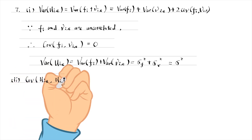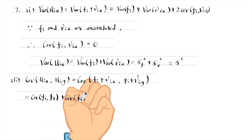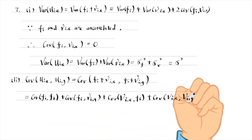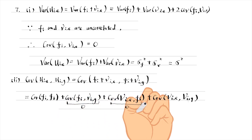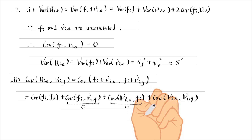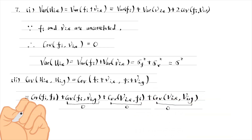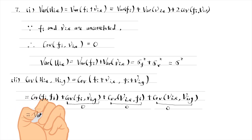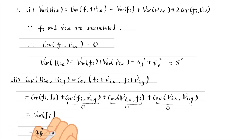For part 2, the covariance between two different composite errors can be written out as four terms. The second and third terms are zero, because the firm-specific error f and the individual-specific error nu are uncorrelated. The last term is zero because the individual-level errors are uncorrelated to each other. So the covariance between different composite errors is the variance of the firm-level error term, sigma-f-squared.